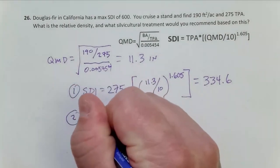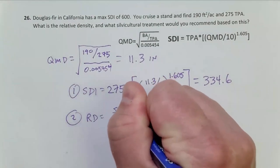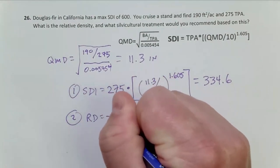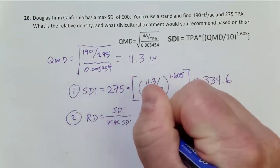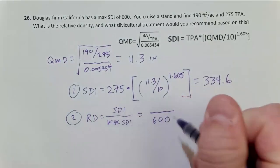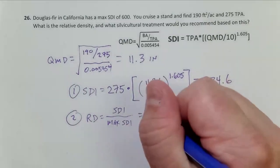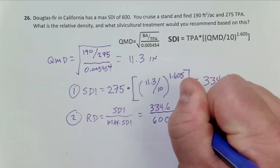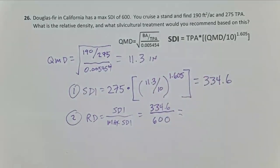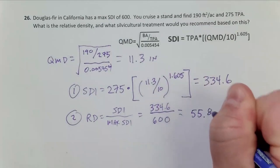relative density equals SDI divided by max SDI. So we know in this example, we've been given that our max SDI is 600 for Douglas fir. We just calculated SDI at 334.6. And so when we look at this, relative density is 55.8 percent.